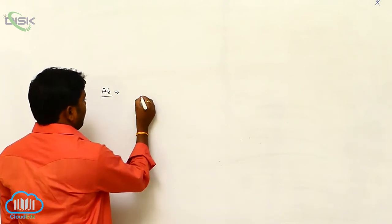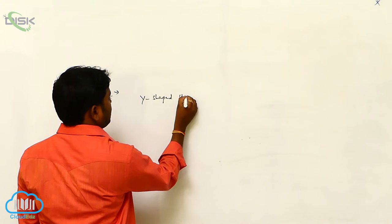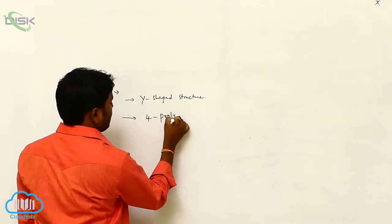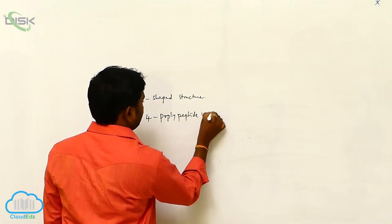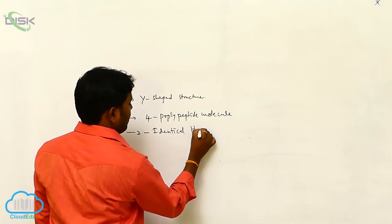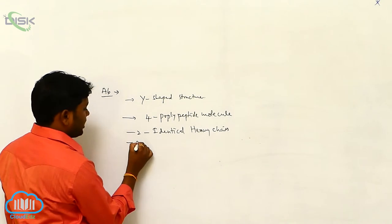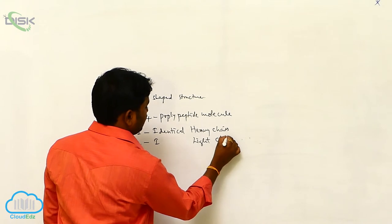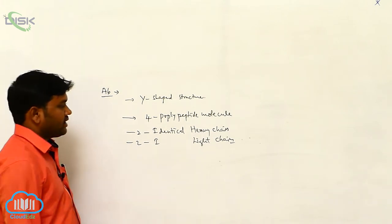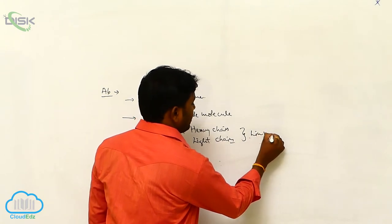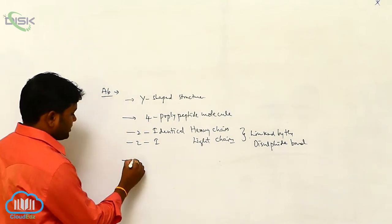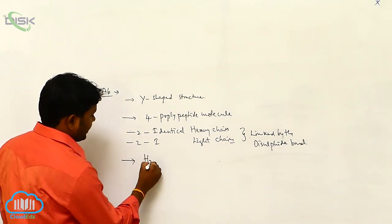Generally, the antibody is in a Y-shaped structure. It is a molecule of four polypeptide chains: two identical heavy chains and two identical light chains, linked by disulfide bonds. It is represented as H2L2.